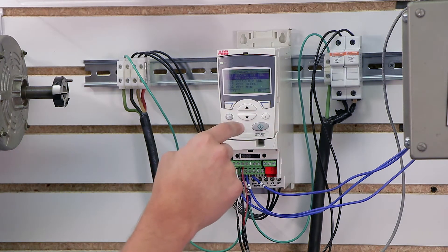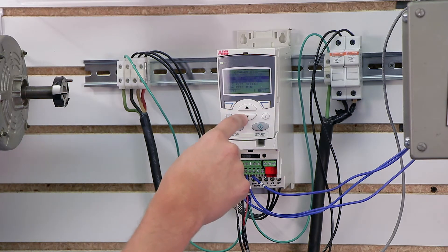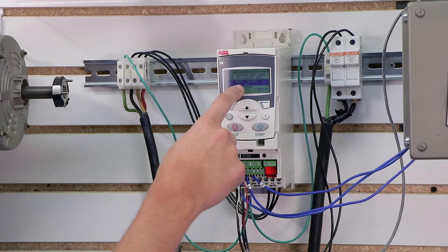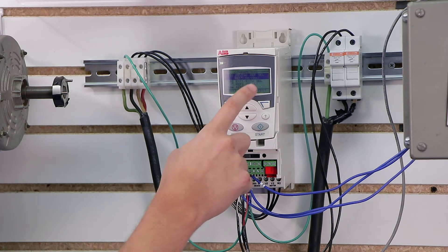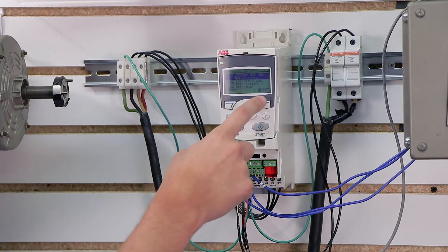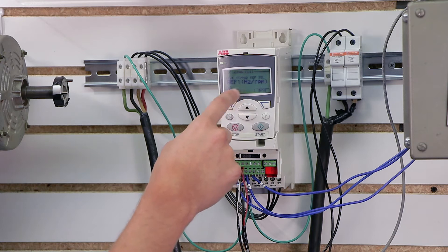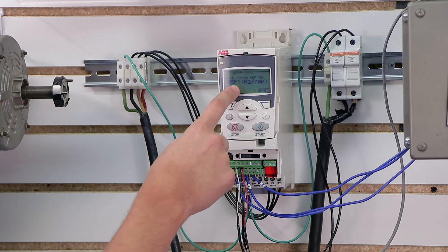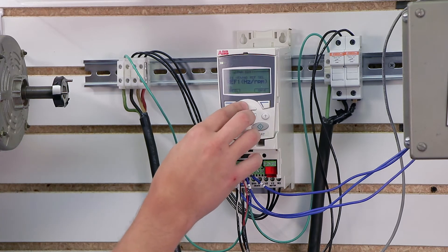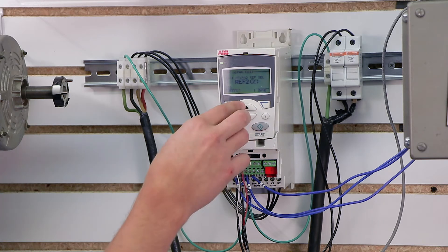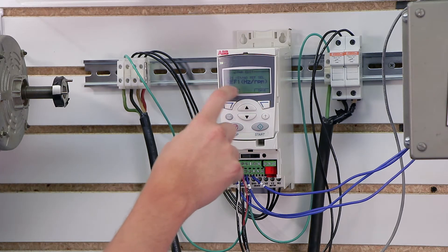Once we're inside here, I'm going to go through the first couple of these because they can be somewhat confusing. 1101 is the keypad reference select. This is basically your default reference selection when you're in local control, what essentially the drive is looking for to get its speed. The macro I chose actually by default is looking at the speed pot. Right now I'm just having it look at reference 1, and that's really what you need to remember - reference 1 is the default.